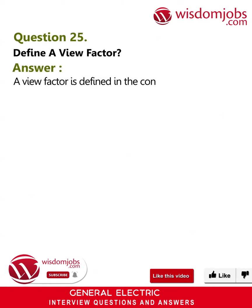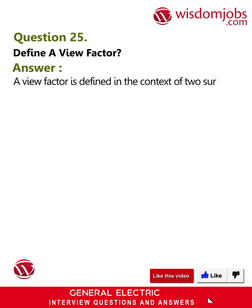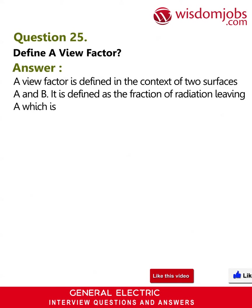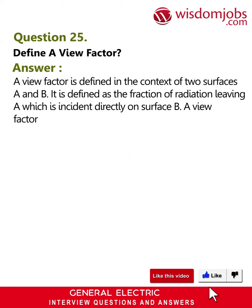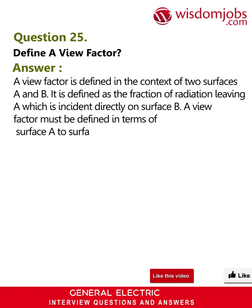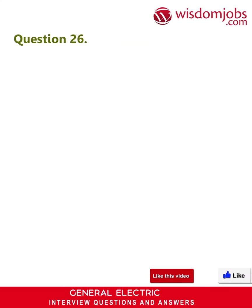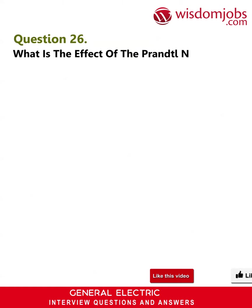Question 25: Define a view factor. Answer: A view factor is defined in the context of two surfaces A and B. It is defined as the fraction of radiation leaving A which is incident directly on surface B. A view factor must be defined in terms of surface A to surface B: F(A→B).